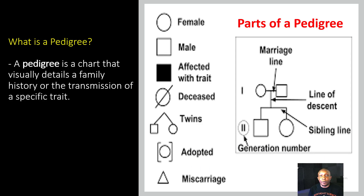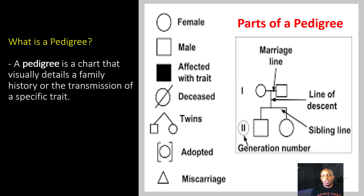Let's go ahead and dive in. What is a pedigree? A pedigree is a chart that visually details a family history or the transmission of a specific trait. But let's go ahead and first look at the specific parts of a pedigree.